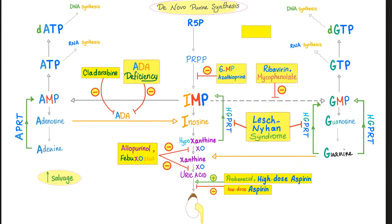Let's talk about degradation. You have inosine, which will become hypoxanthine. Hypoxanthine can become xanthine thanks to xanthine oxidase, a famous enzyme. Xanthine can become uric acid by the same enzyme, xanthine oxidase. Uric acid will end up in the urine.